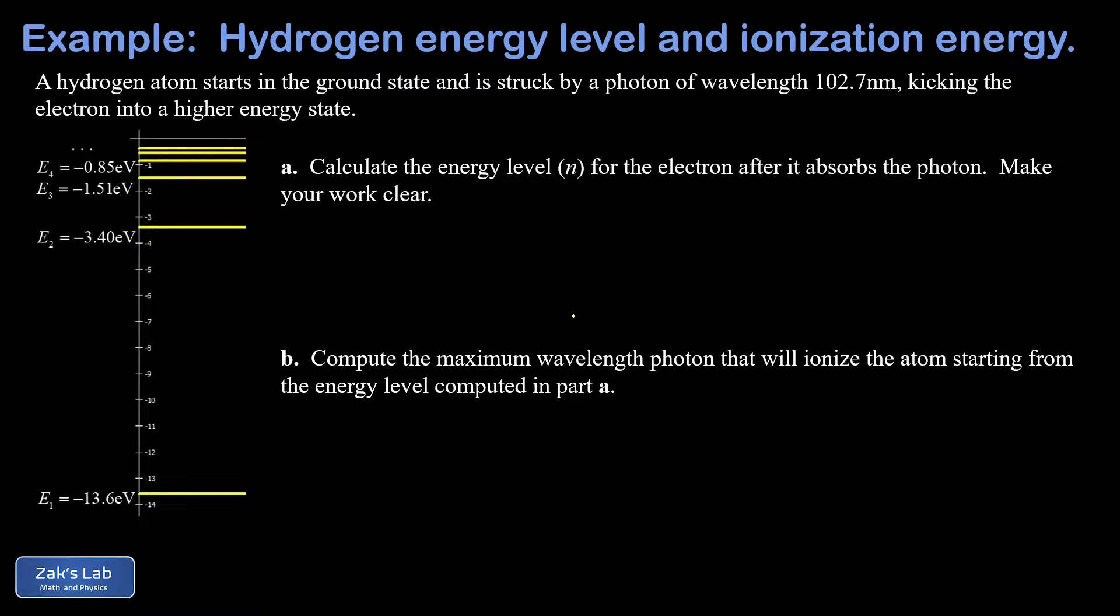In this video we're looking at energy levels in the hydrogen atom. We're told that a hydrogen atom starts in the ground state and then it's struck by a photon with a wavelength of 102.7 nanometers. This kicks the electron into a higher energy state, but we don't know which one, and that's what we're trying to answer in part a.